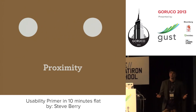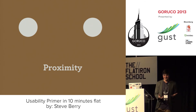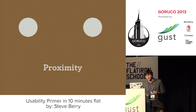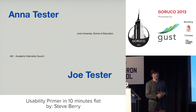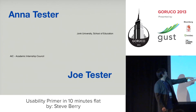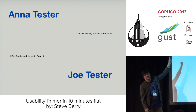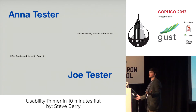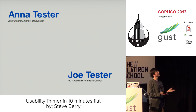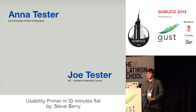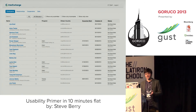Another one — people always say when things are close together you relate them. There's actually a whole field of research called proximity. Things that are close together, users will infer a relationship. Here's an example of something without good proximity: we have Joe Tester, AIC Academic Internship Council, John K. University, and Anna Tester. When these things are arbitrarily aligned, you don't know the relationships. Moving them together, I think Anna Tester belongs to John K. University.